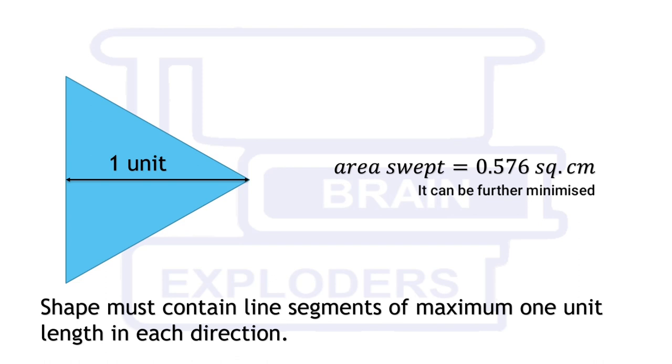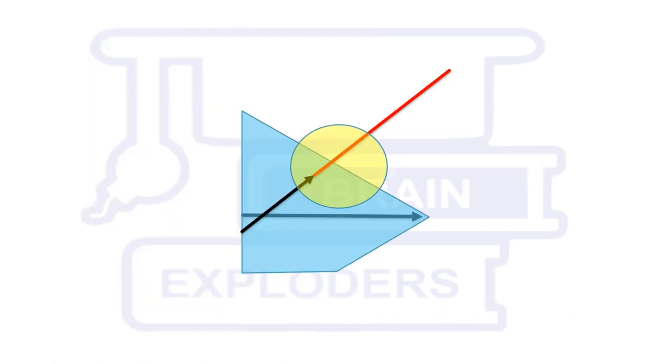Now the shape must contain line segments of maximum 1 unit length in each direction. This statement is written because if at any angle there is any line segment in this figure which is greater than 1, then it's a clear conclusion that the area can be further reduced. Suppose at this angle we intersect this triangle and here this one is more than 1 unit. This intersection here is more than 1 unit. So this part can be removed from the shape and hence area can be reduced.